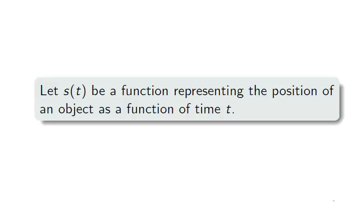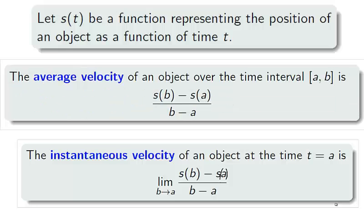Recall from 1.4 that s is a function reserved for the distance an object moves with respect to time. The average velocity of an object between two times is the average rate of change on s. Similarly, the instantaneous velocity of an object at a certain time is the instantaneous rate of change for s. When we take limits, averages become instantaneous.